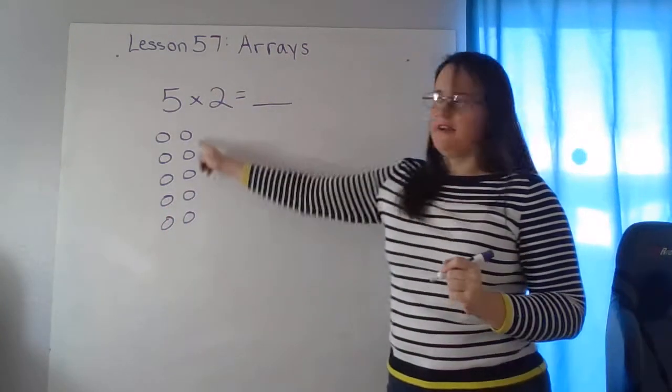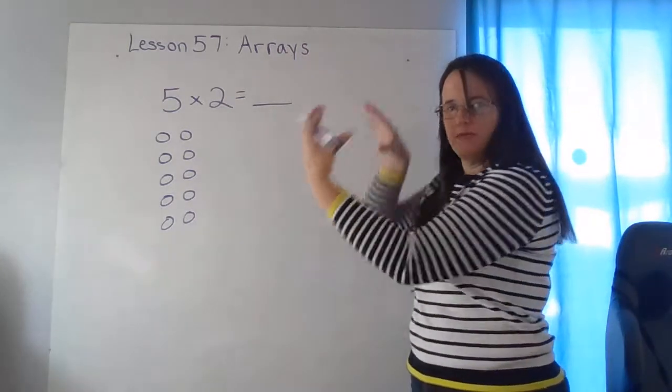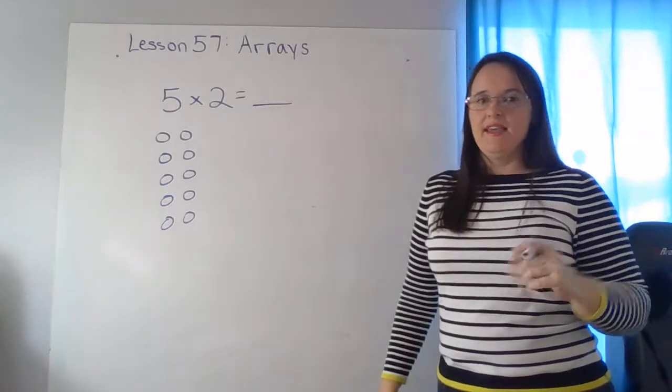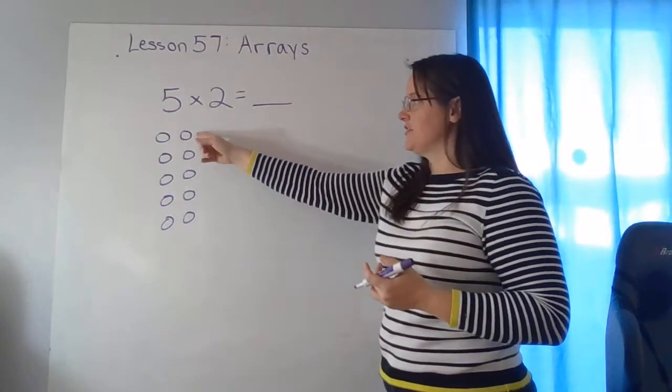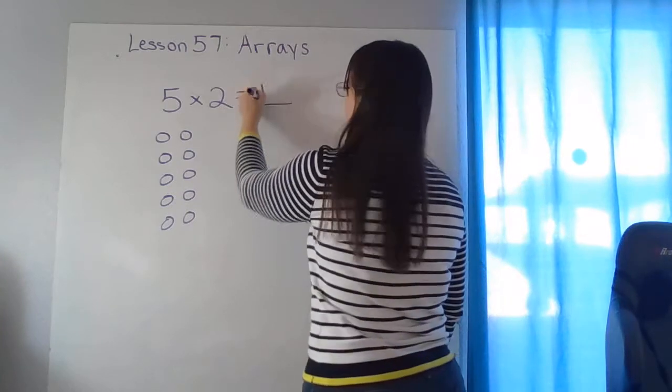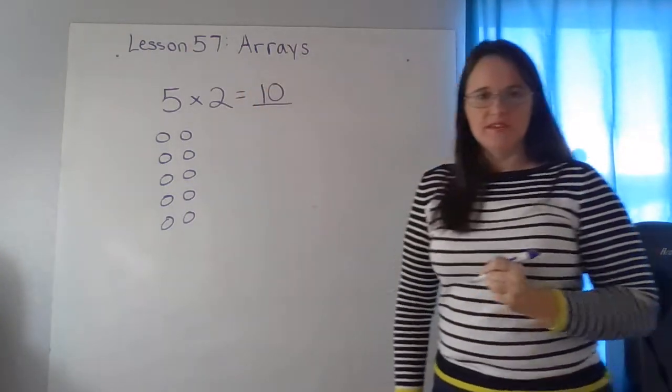Okay, there's my array. Yours might look like this or you might have tilted it so that you have five across and only two rows. And then we have to count for the answer. Two, four, six, eight, ten. Five times two equals ten.